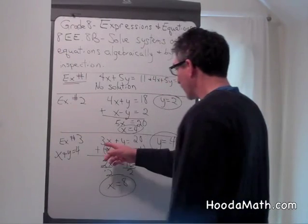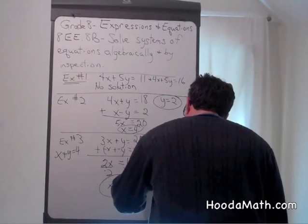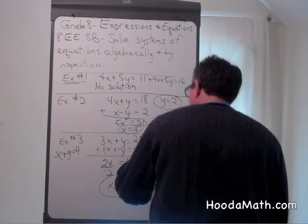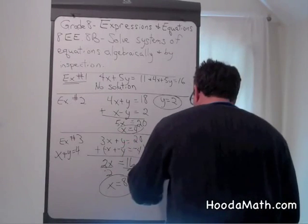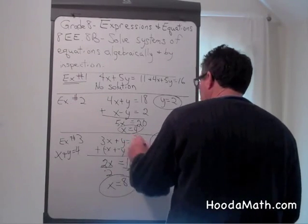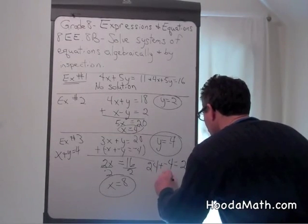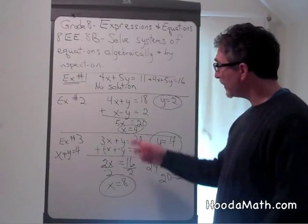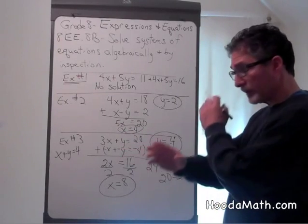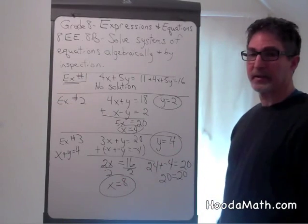Let's substitute back here. 3 times x, 3 times 8 is 24, plus substitute for y, negative 4. And does that equal 20? Yes. So therefore, we know that the solution, or where these two equations would intersect, would be when x equals 8 and y equals negative 4.